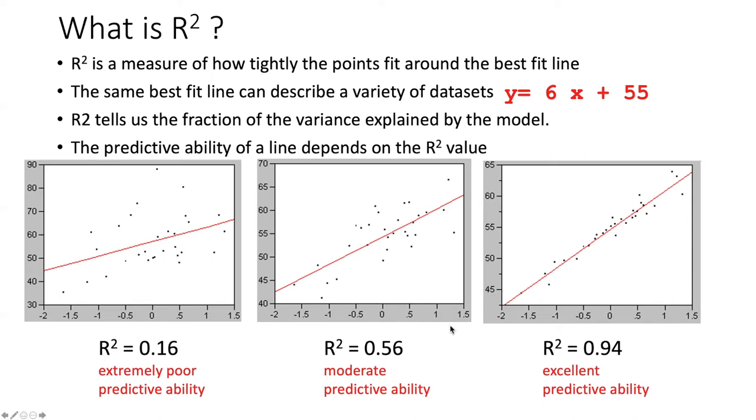They also can be thought of as the fraction of the variance explained by the model. So in the case of an R-squared of 0.16, the model doesn't really tell us very much about why one point varies from the other, whereas with an R-squared of 0.94, 94% of the variation among the points on this graph could be considered due to the effect of this line.